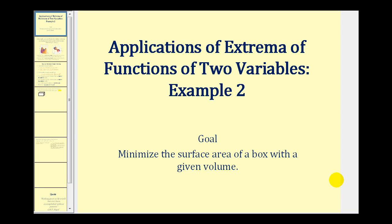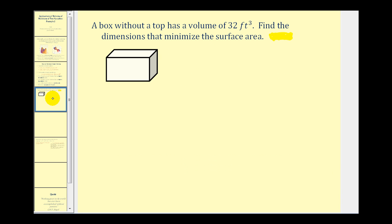Welcome to a second example on the applications of extrema of functions of two variables. The goal of this video is to minimize the surface area of a box with a given volume. Here we have a box without a top that has a volume of thirty-two cubic feet, and we want to find the dimensions that minimize the surface area.